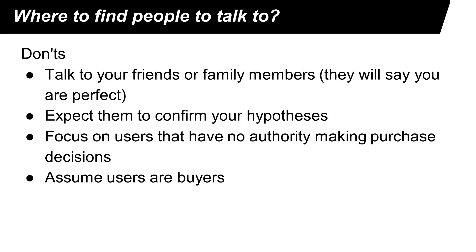Here are a few things you should avoid. Don't talk to your friends or family members, because they will naturally be biased and tell you that you are perfect — they will not help you identify the right problems. Instead, they will simply tell you whatever you want to do is great. You don't want to ask people to confirm your hypothesis. You want people to tell you your hypotheses are wrong so you can adjust them. Also remember the difference between users and decision makers — do not assume users are buyers.